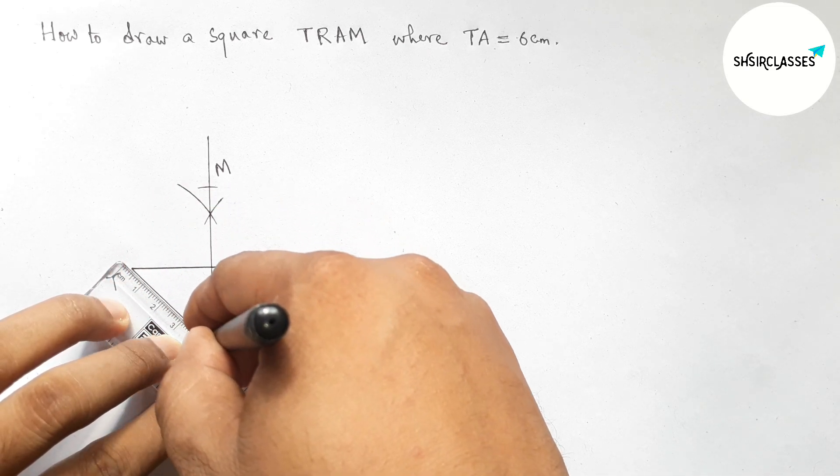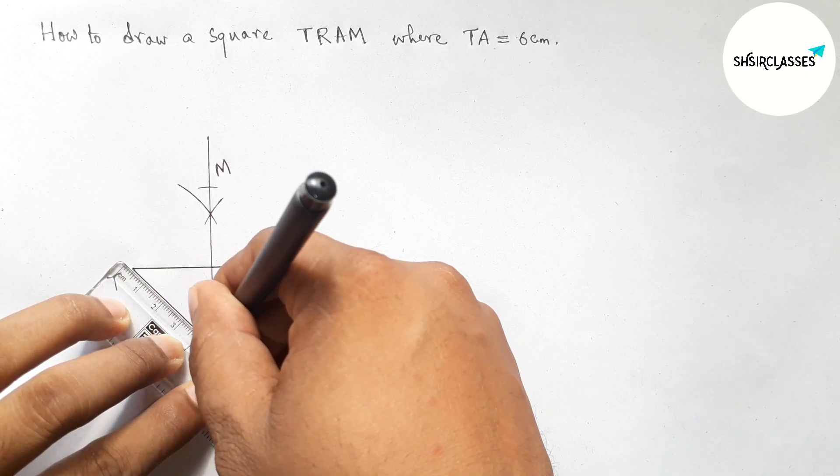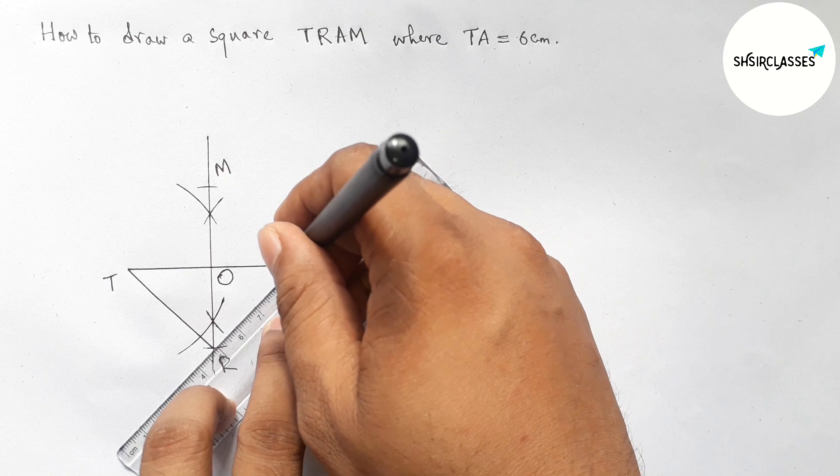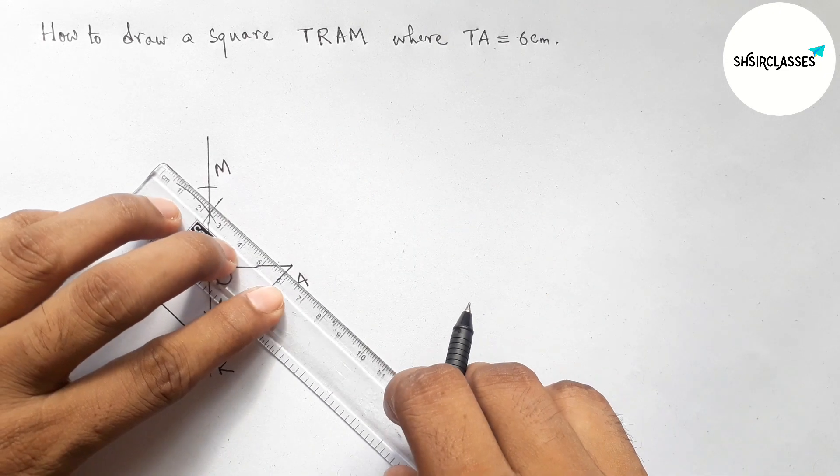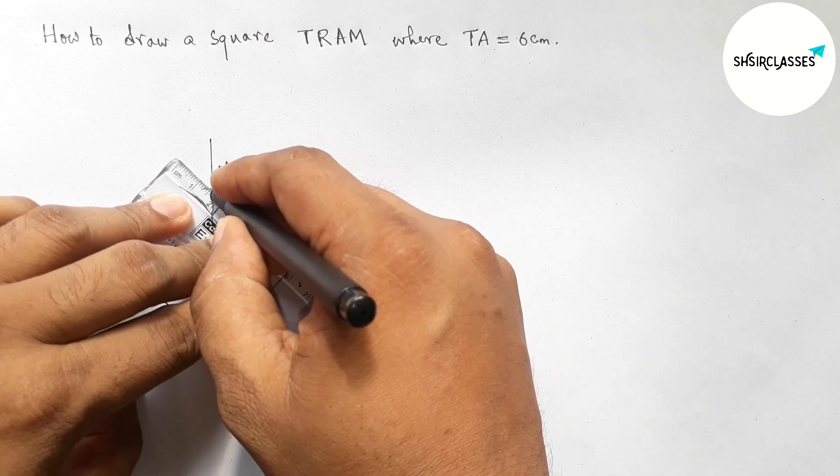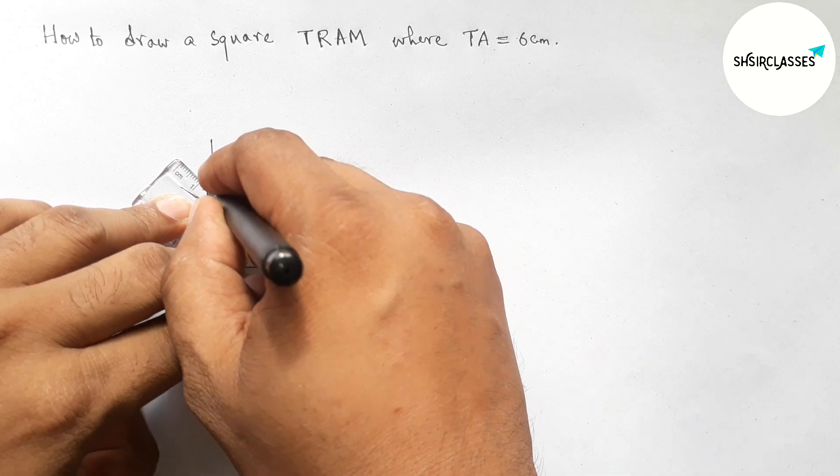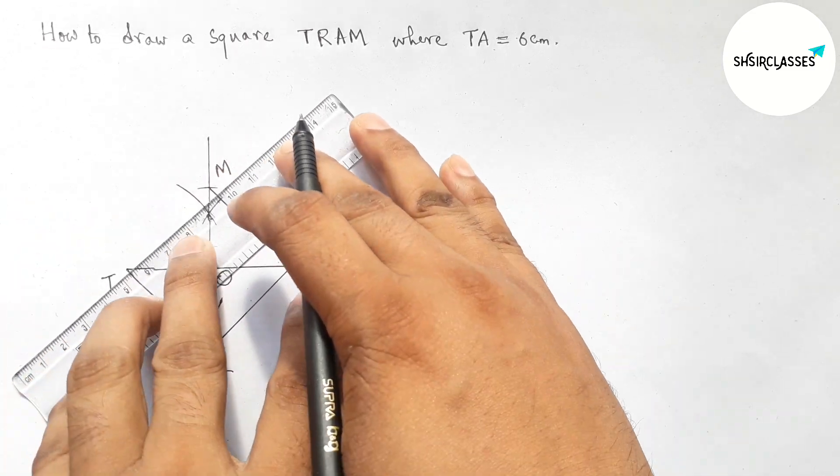Then joining RA, then joining AM, and last joining MT to complete our required square. So this is the required square.